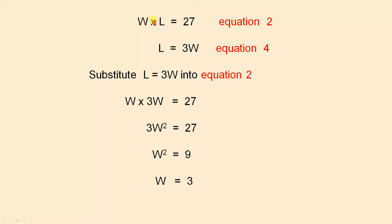So remember equation 2 was W times L equals 27. And we had L equals 3W for equation 4. So see how L equals 3W, very straightforward. We substitute that into equation 2. So wherever we see L in equation 2, we substitute 3W. So W by 3W equals 27. 3W squared equals 27. W squared equals 9. Therefore W equals 3. Now W is plus 3 here because it's a length. You can't have a negative length. So W is 3.